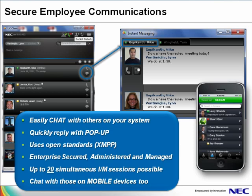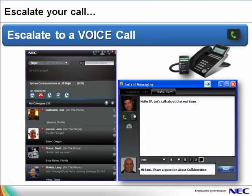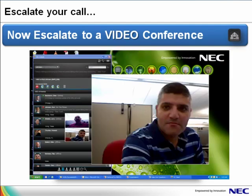One of the best features of the UC Client is the ability to escalate calls from chat, to voice, to video, right from the UC Client. When you start a call with a chat, by clicking on the voice icon, you can automatically escalate the call to a voice call on your preferred device. With a single click, the call may be escalated to video.